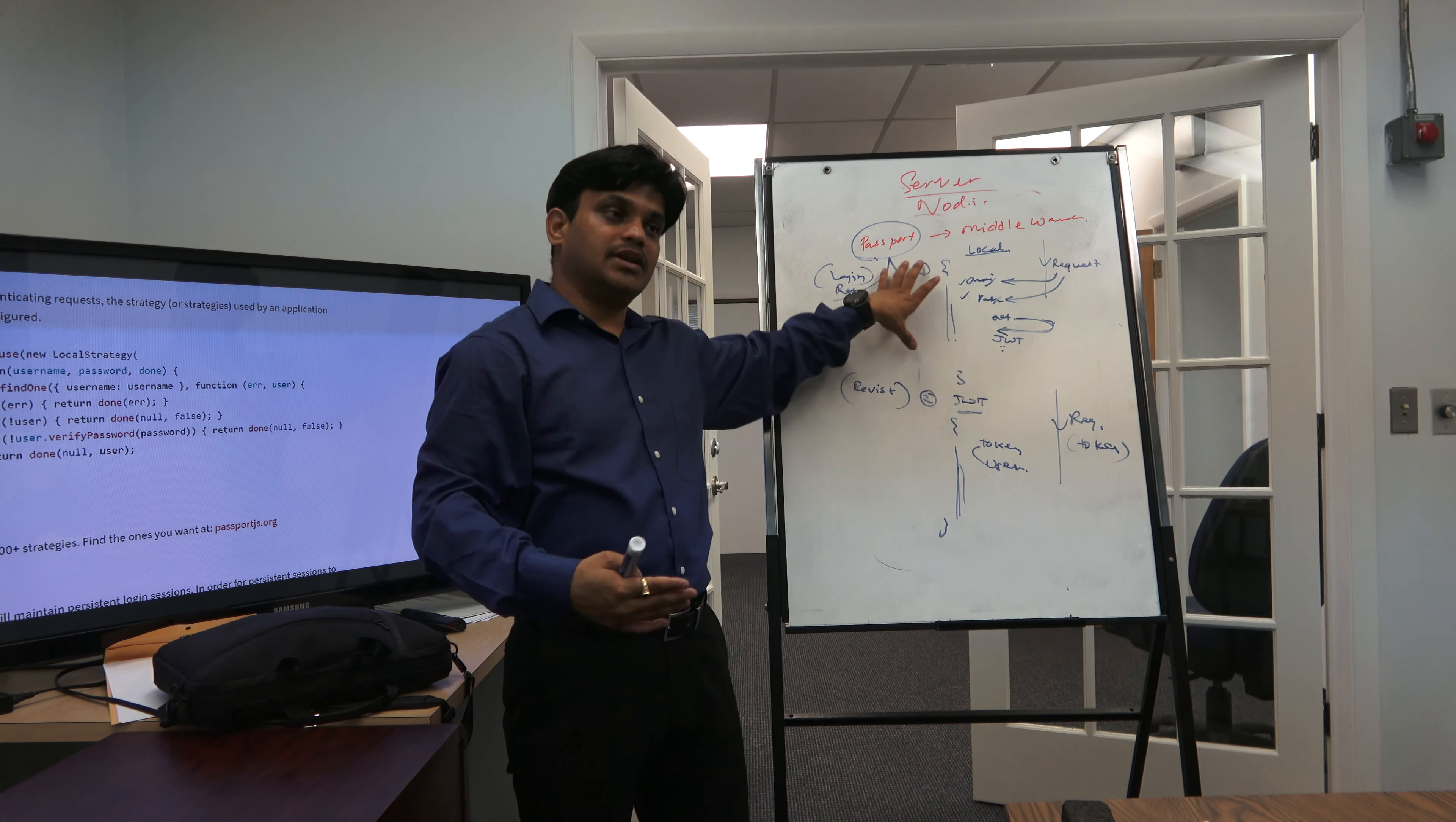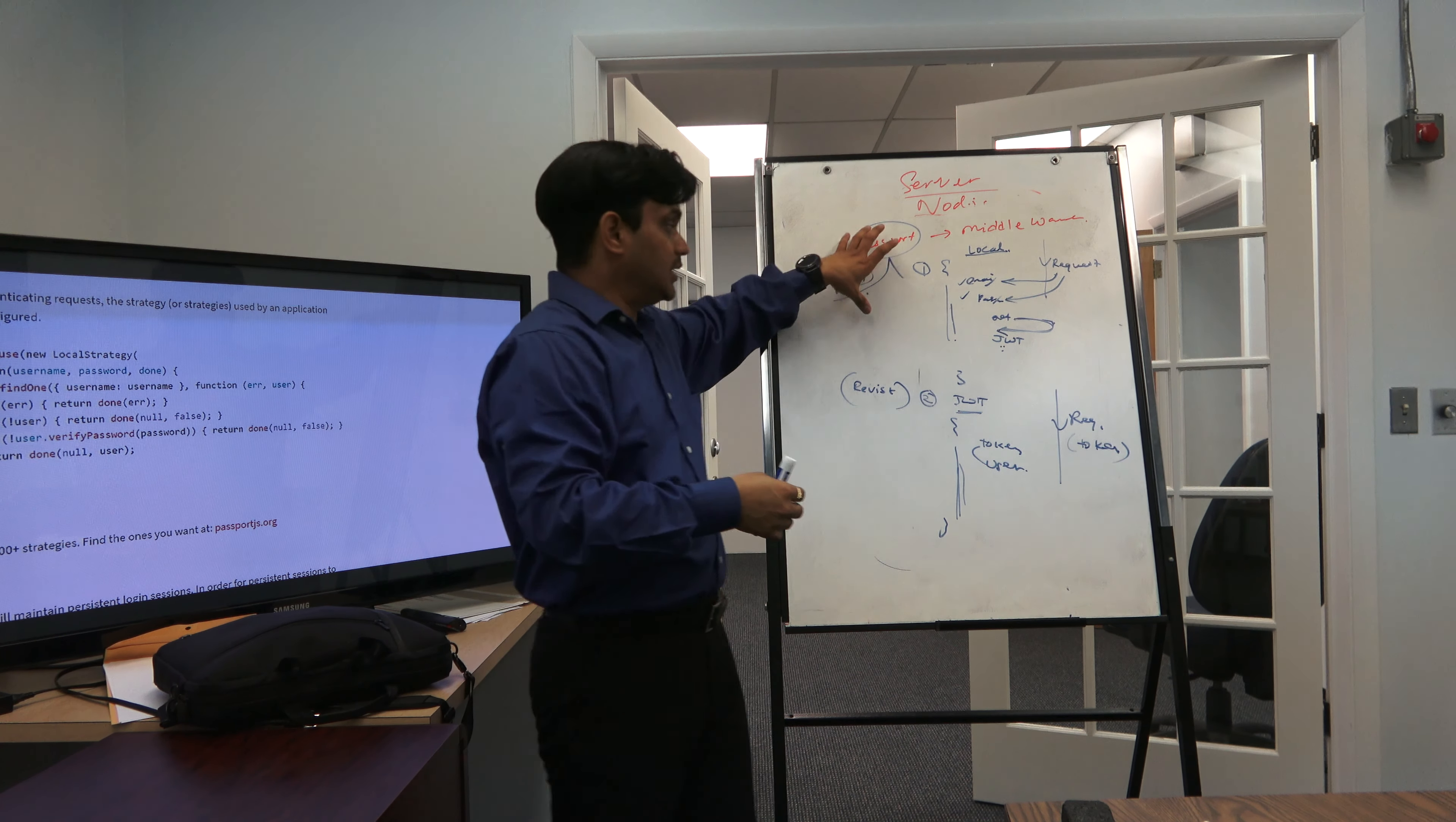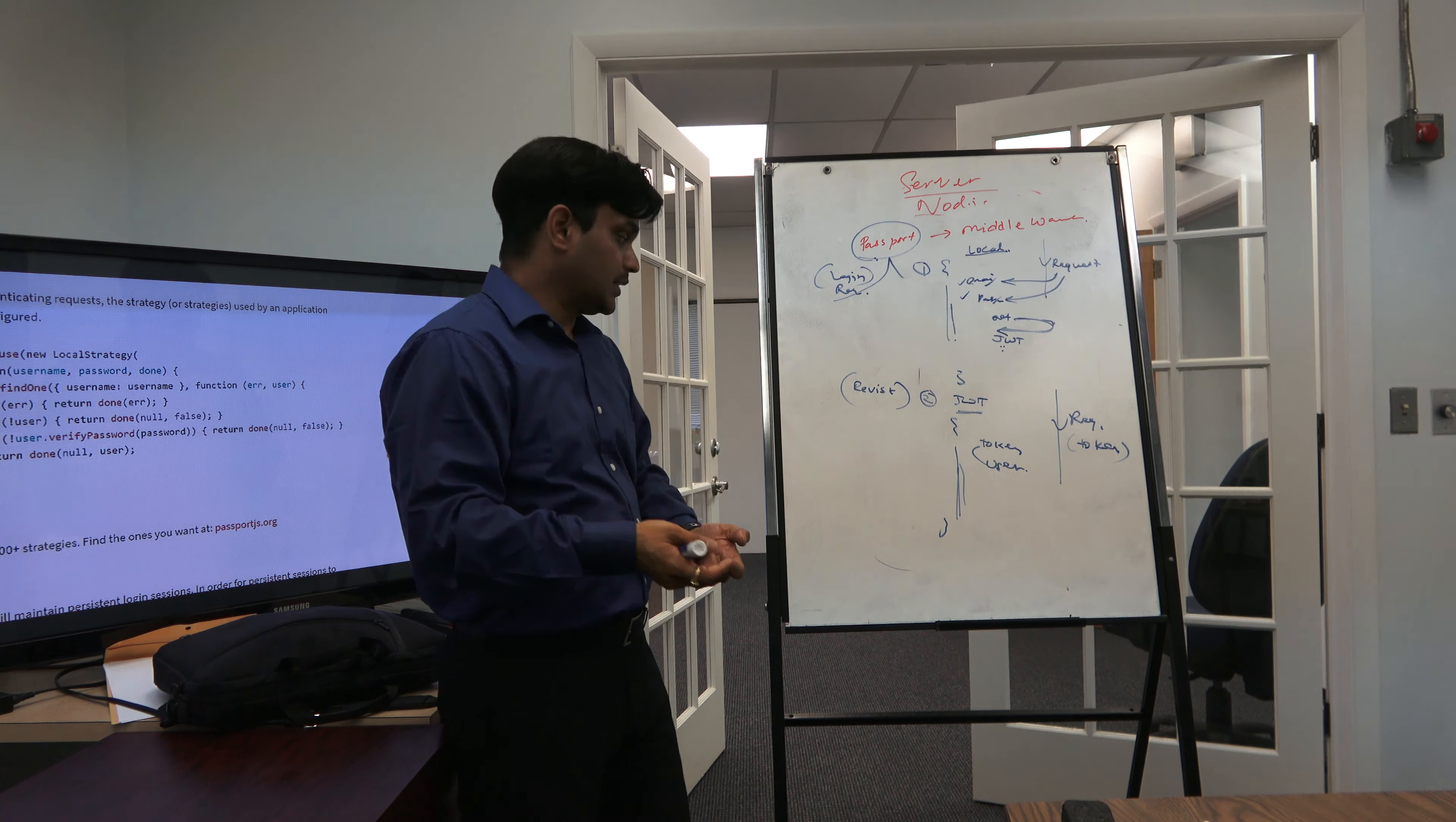This middleware is in the server side. That interceptor was in the client side. So in the server side, this interceptor will come - JWT interceptor, whatever this middleware we call it. This will take the message and extract the token out of the header.